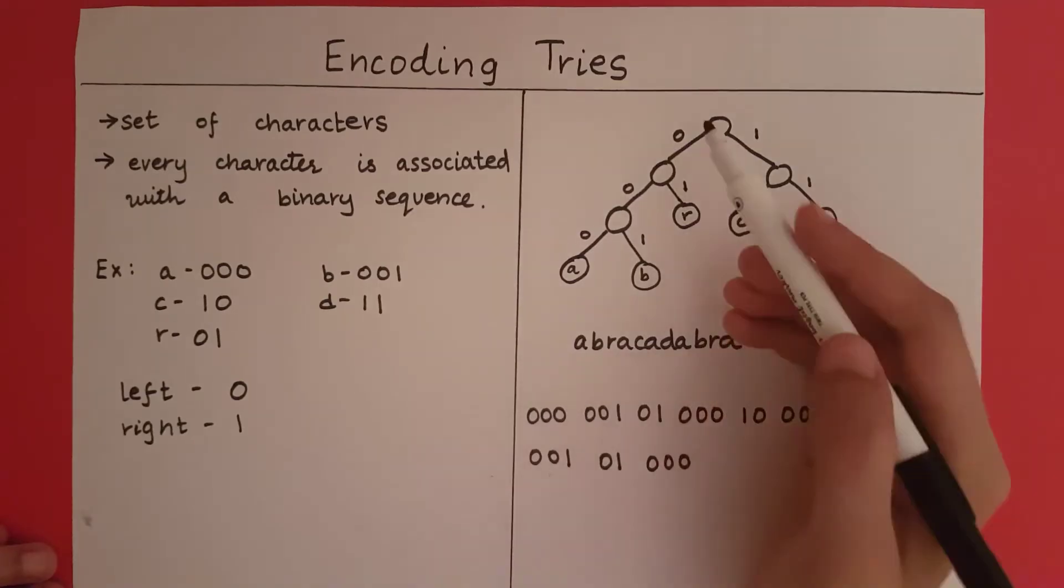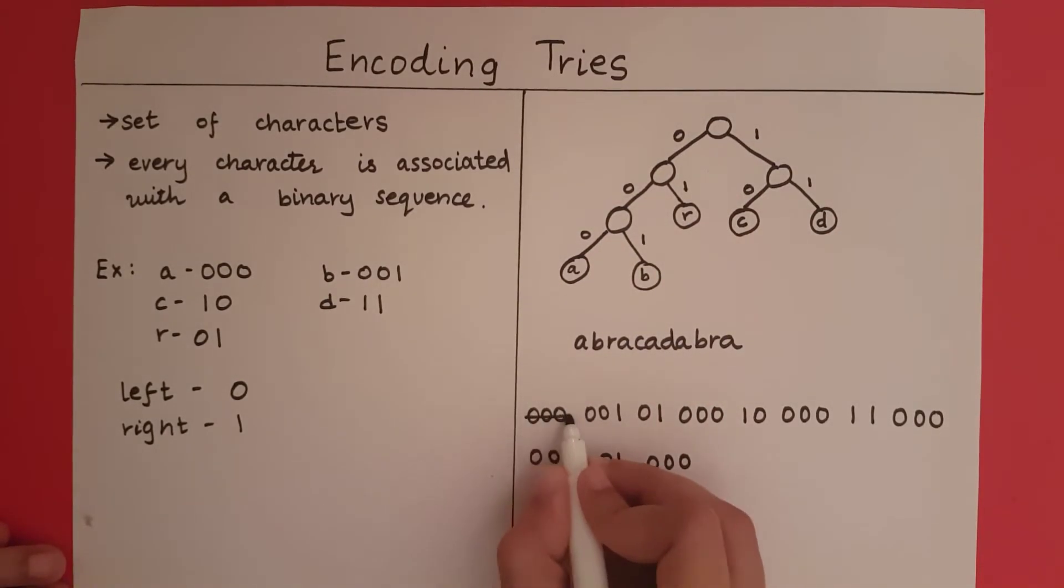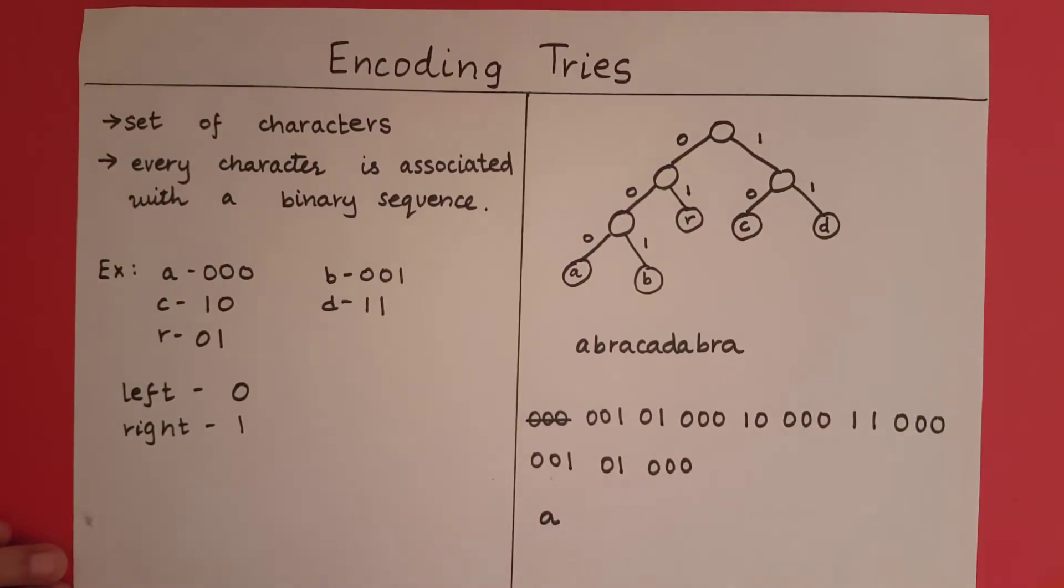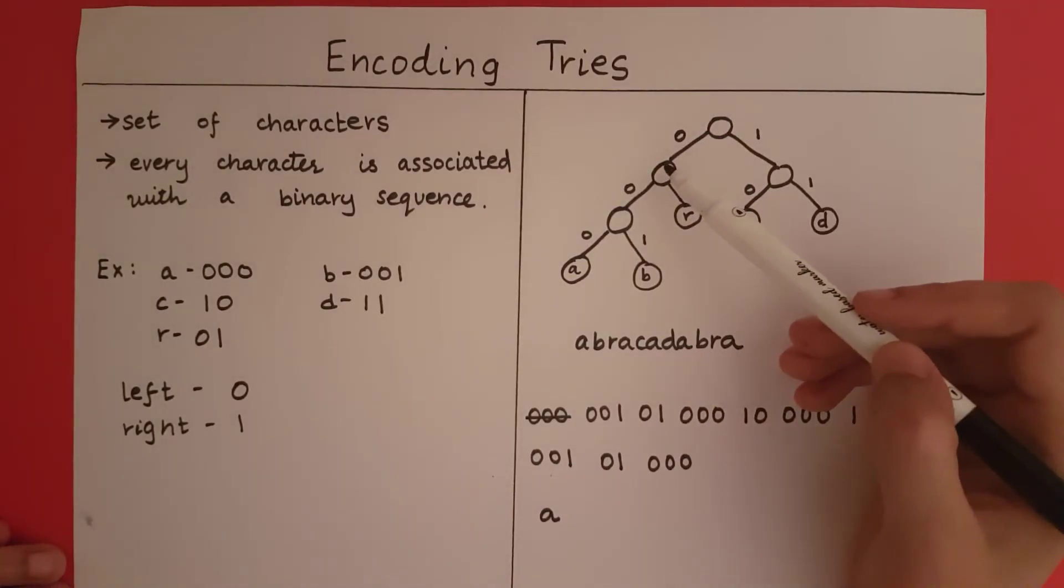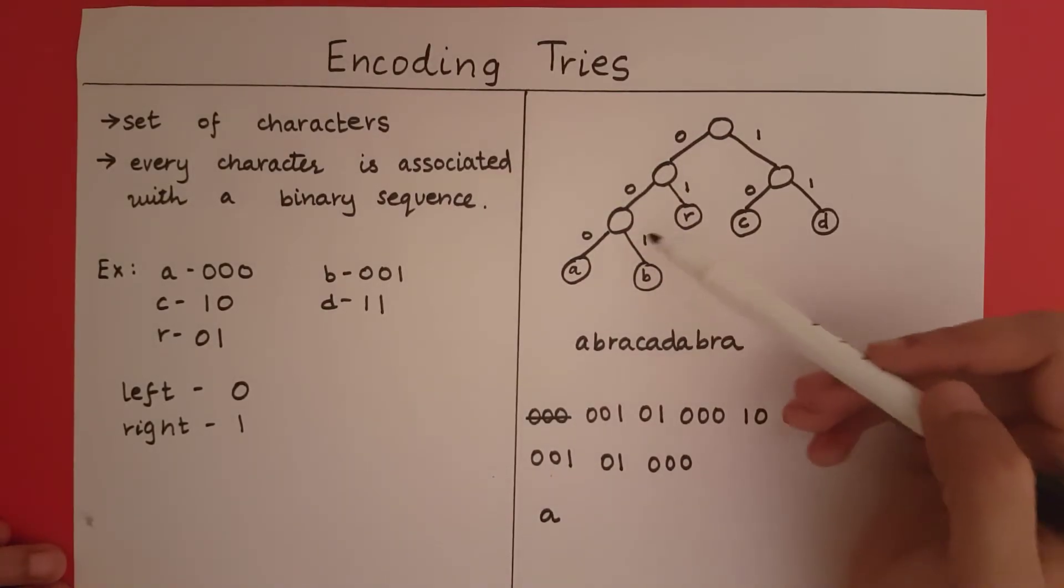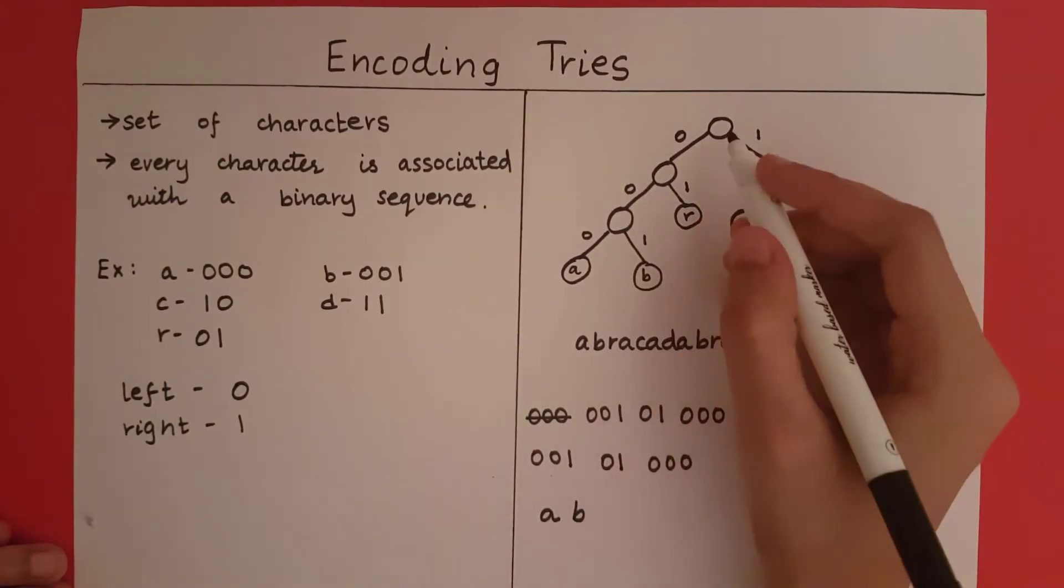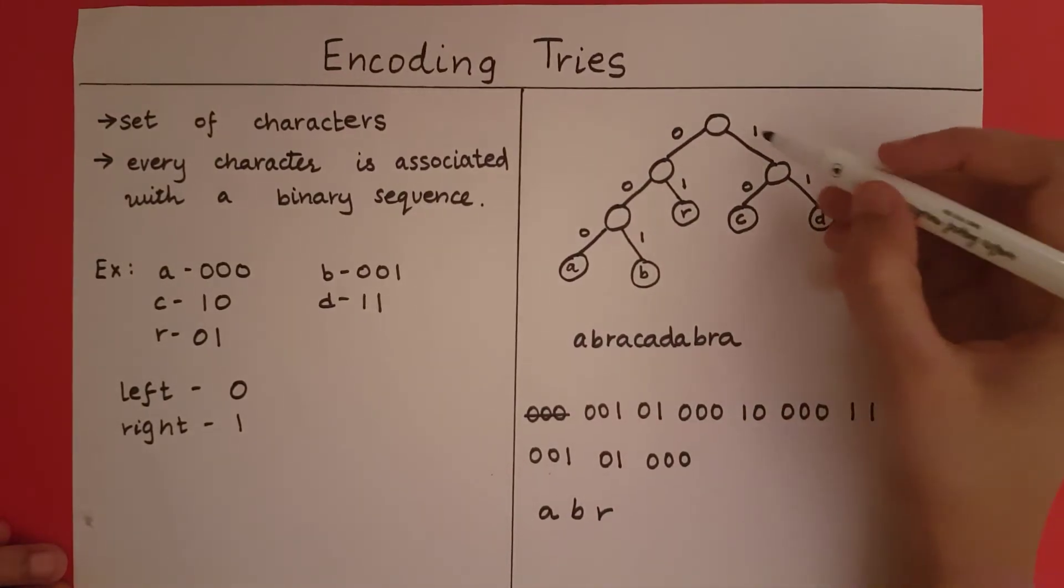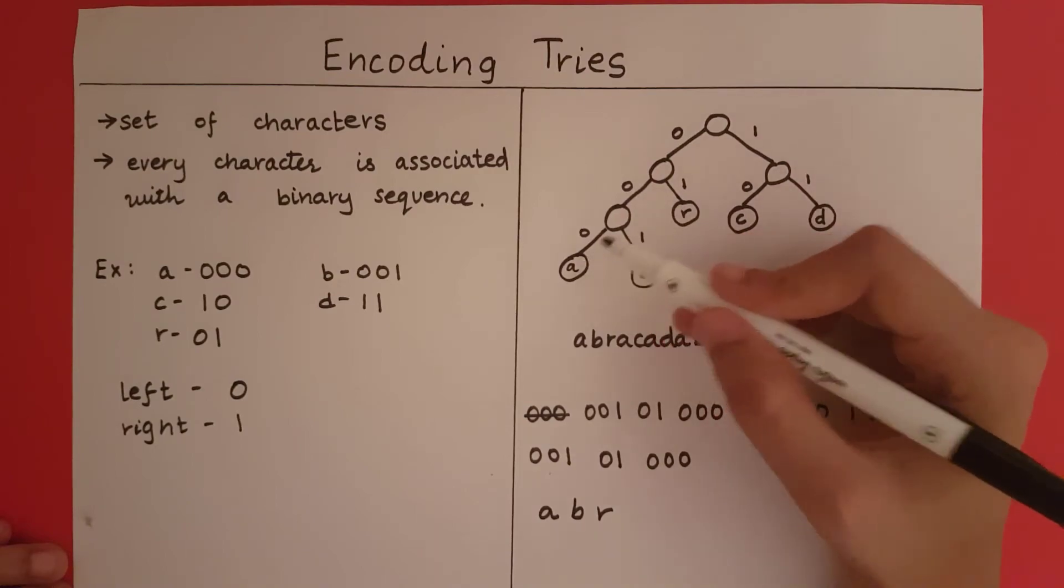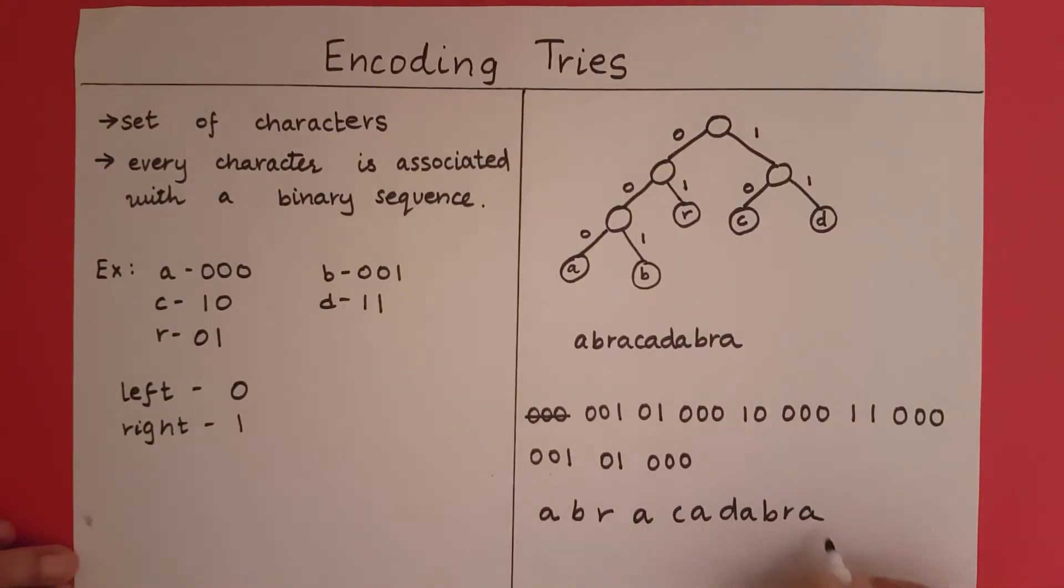So let's see for this 000. We have found an A, so I am going to cut out this and write an A. Then I have 001, so I have 001, I will reach a leaf node, so B. Then I have 000, I will reach a leaf node A, and so on. I will get the entire string.